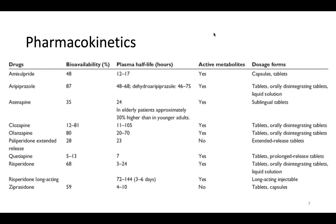The average time for relapse in stable patients with schizophrenia who discontinue medication is 6 months. Clozapine is an exception in that relapse after discontinuation is usually rapid and severe. Thus, clozapine should never be discontinued abruptly unless clinically needed because of adverse effects such as myocarditis or agranulocytosis, which are true medical emergencies.